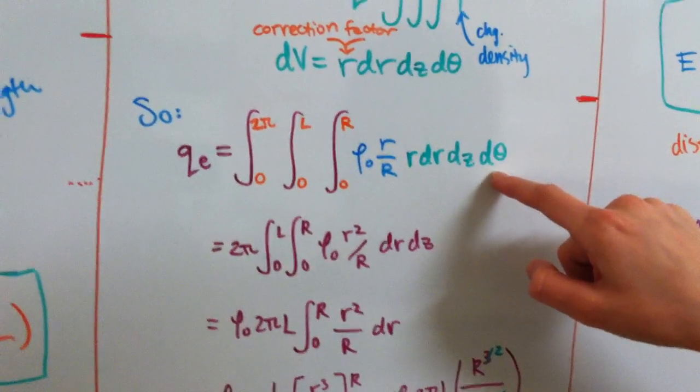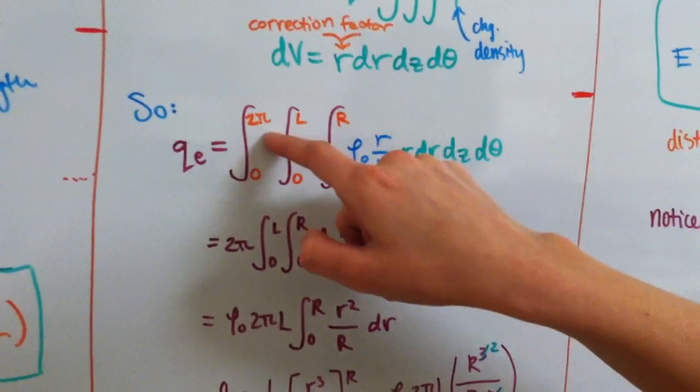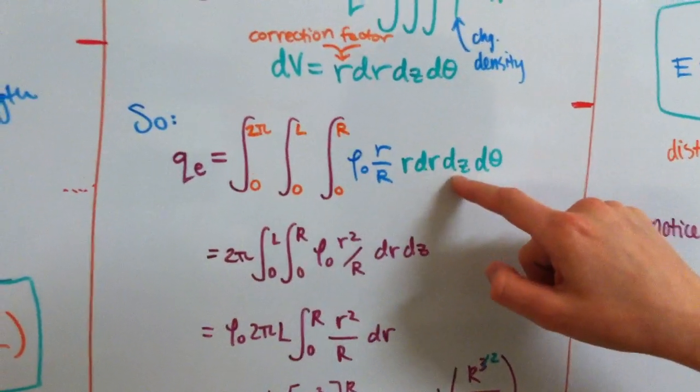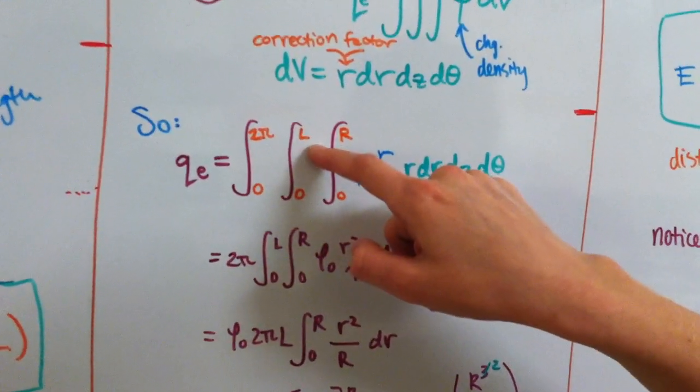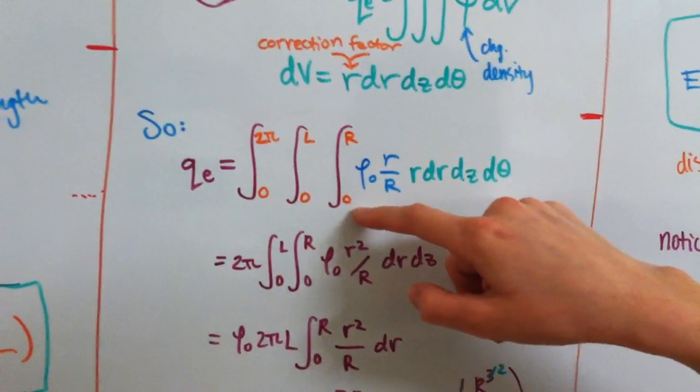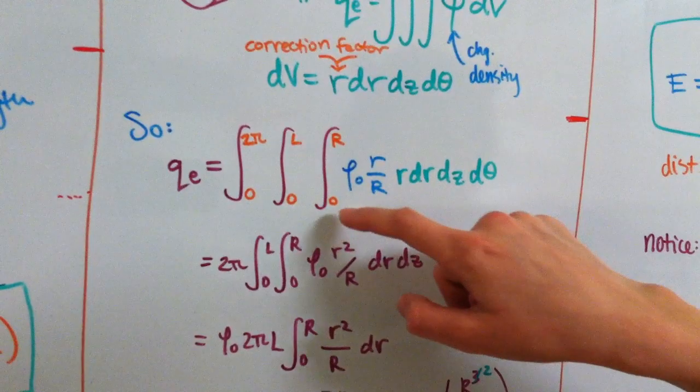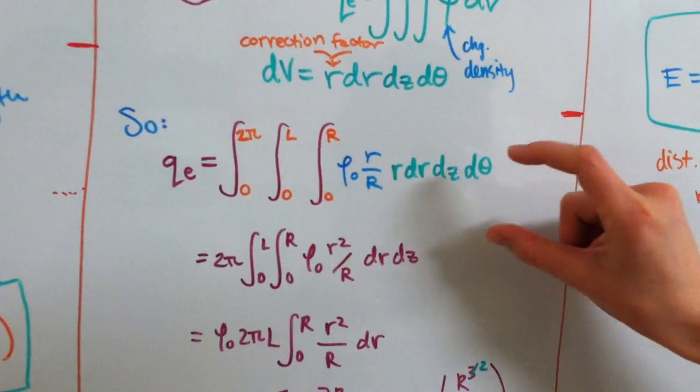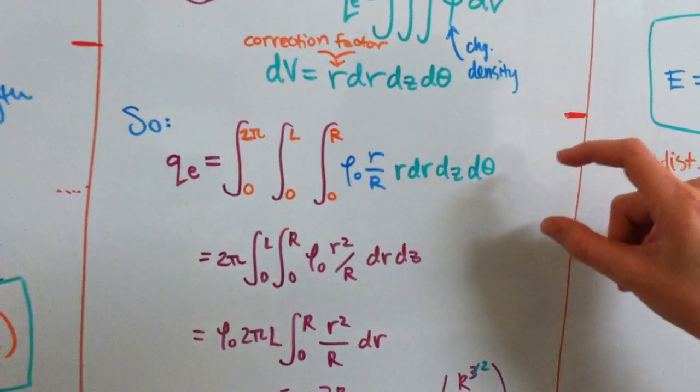So, here we have d theta, with limits from 0 to 2π, dz, with limits from 0 to L, because it's the length of the cylinder, and then dr, with limits from 0 to big R, which is the radius of our charged cylinder.